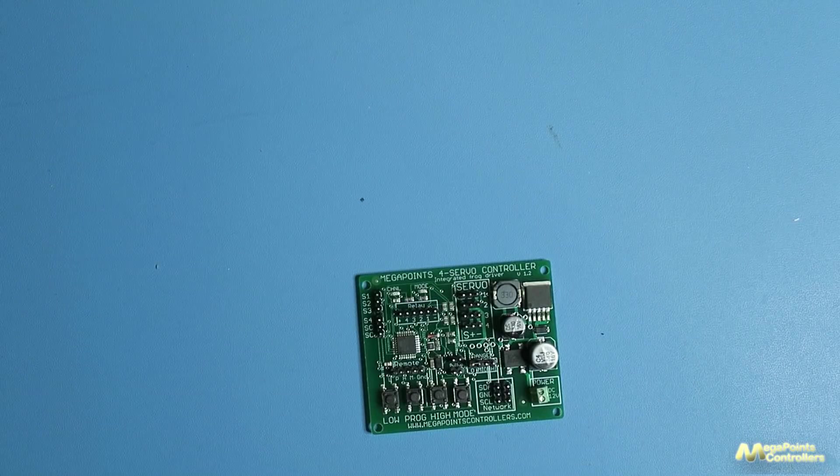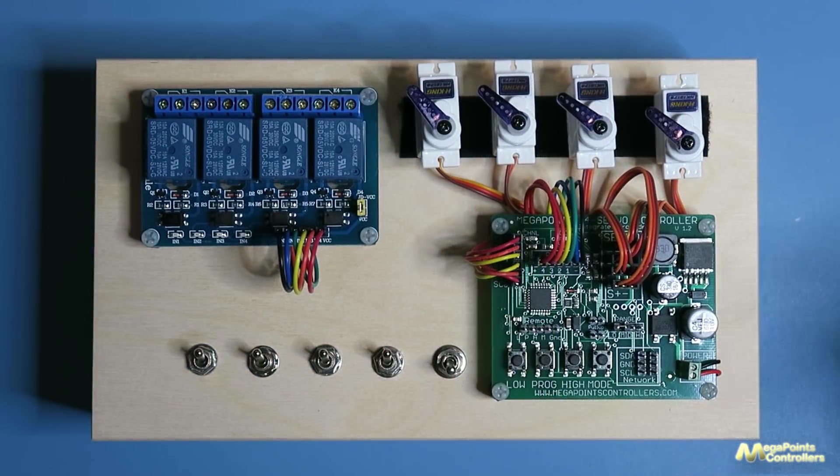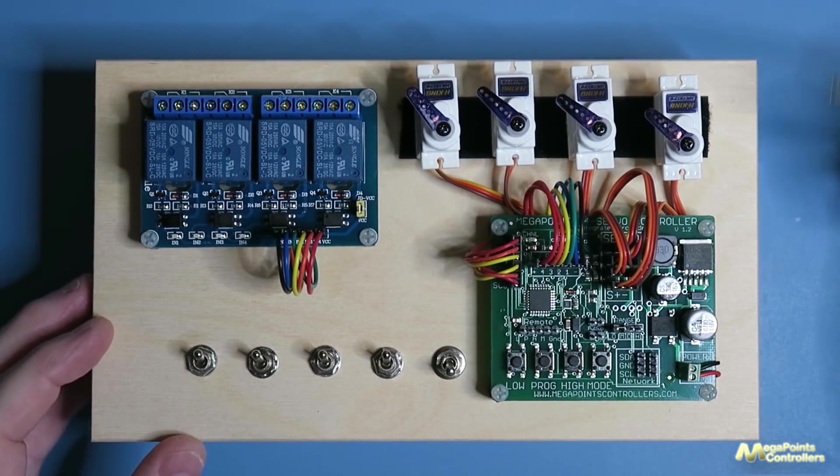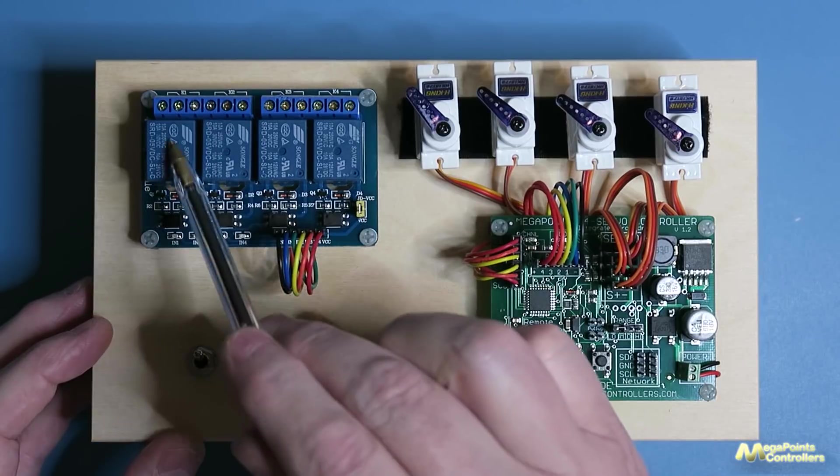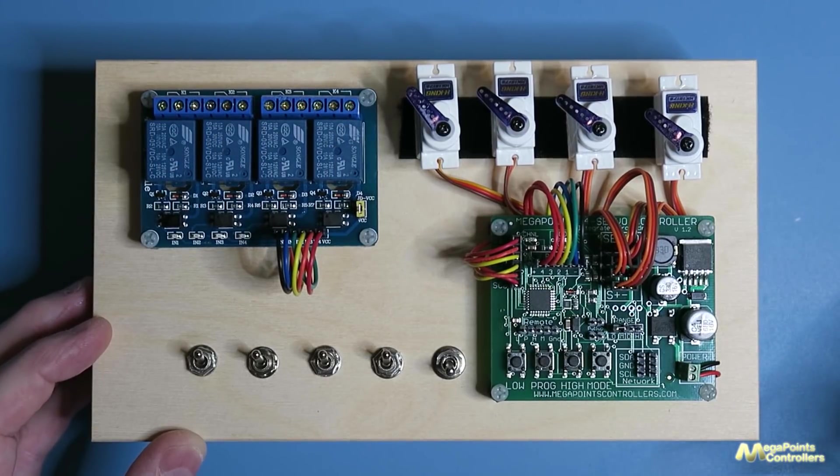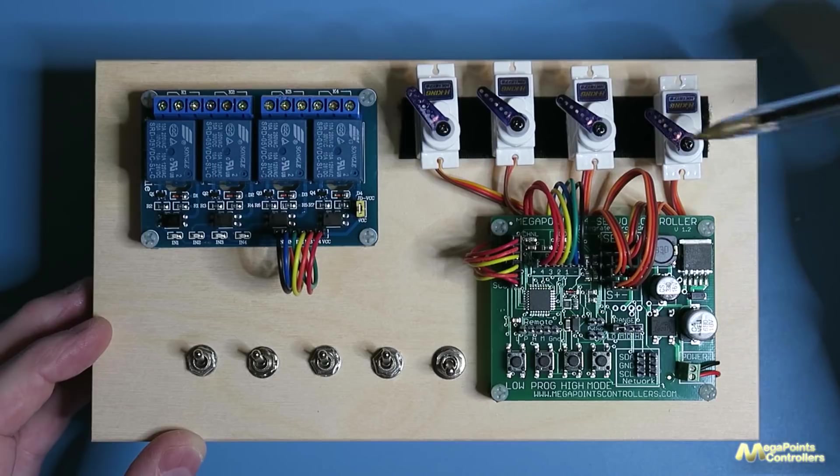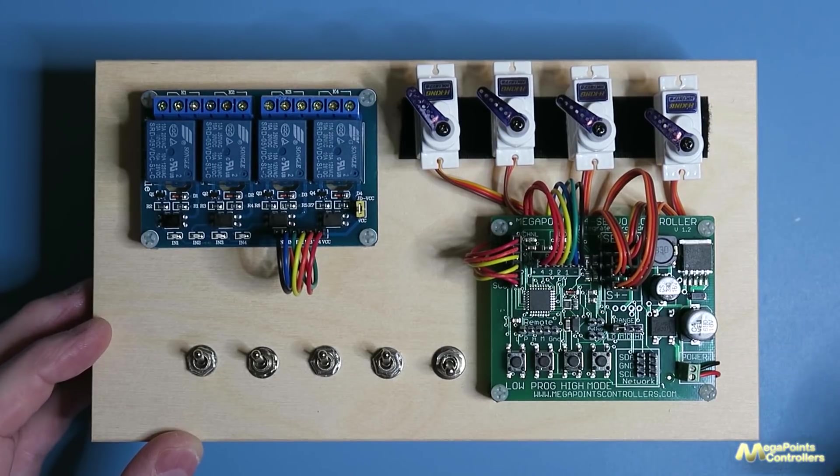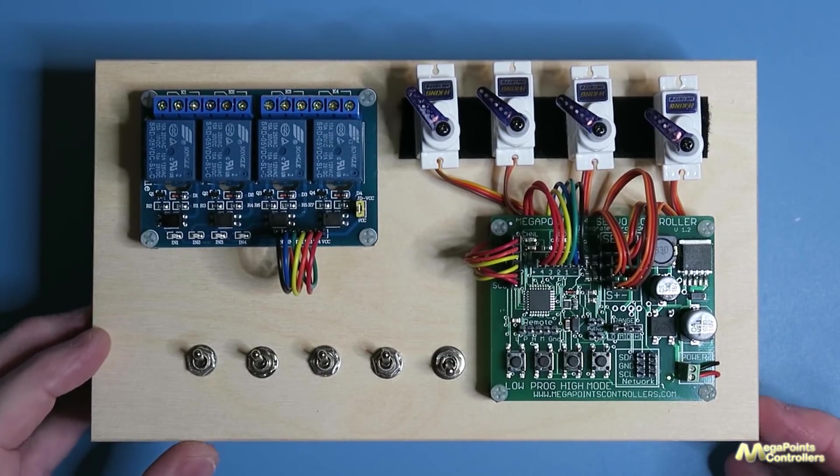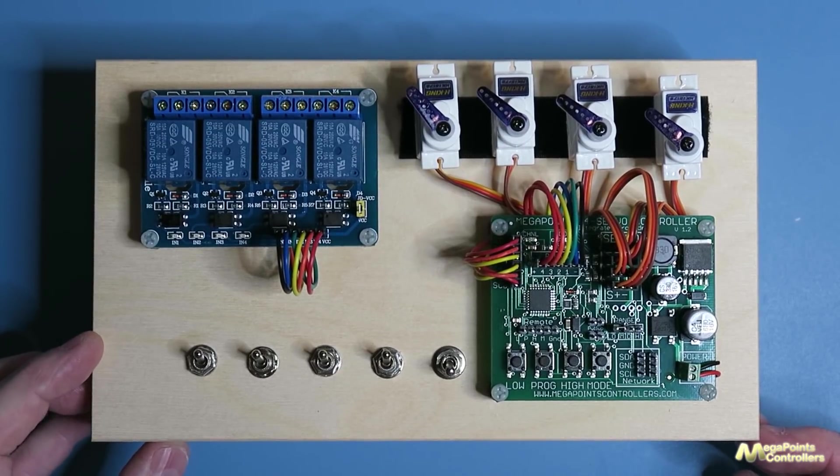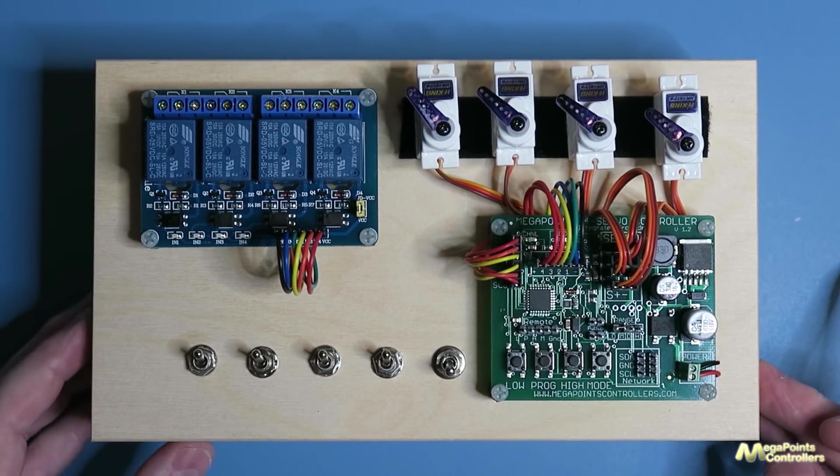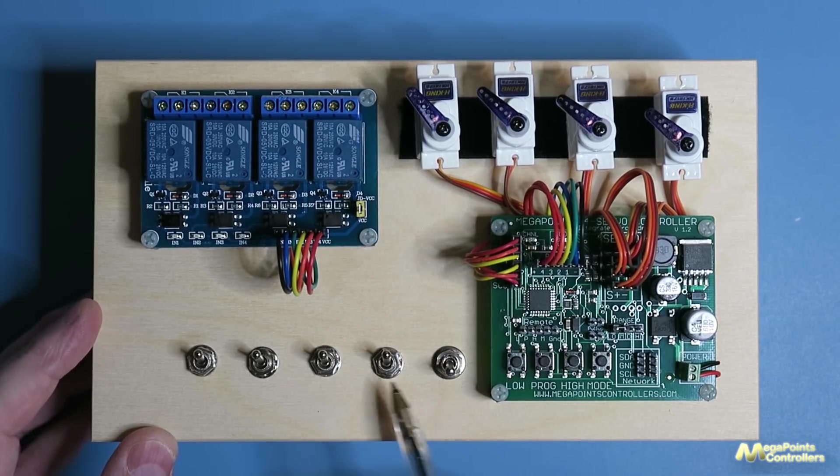So let's see this in action. Here's the Servo 4R connected to one of my demonstration panels. You can see the relays are attached through this supplied cable to the four-way relay module that's also supplied with this board. I've plugged in four servos. These aren't supplied, and the reason they're not supplied is I don't know whether you want servos appropriate for moving points or operating semaphores with a bounce, both of which this unit will do. And I fitted some toggle switches: power and channels one, two, three, and four.